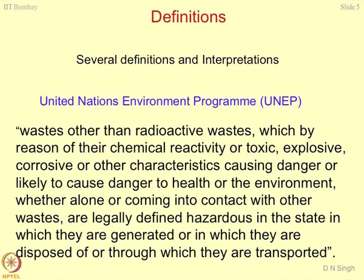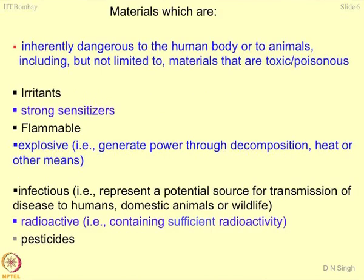I will talk about these attributes later, but this is just to introduce a few definitions where most activities have been defined — what waste is, how it becomes important, and how you classify something as a waste which is a threat to mankind or animals. Another definition states: waste are materials which are inherently dangerous to the human body or to animals — anything dangerous to the human body or animals is a waste material, including but not limited to materials that are toxic, poisonous.